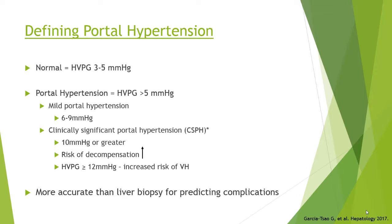In patients with cirrhosis, a normal pressure gradient is 3 to 5 mmHg. Portal hypertension is defined as over 5 mmHg, further classified into mild (6–9 mmHg) or clinically significant (10 mmHg or greater). Clinically significant portal hypertension puts patients at risk for decompensation — ascites, variceal bleeding, hepatic encephalopathy. At a gradient over 12, patients are at higher risk for variceal hemorrhage, which is important when considering therapies like TIPS to reduce pressure gradients below 12.